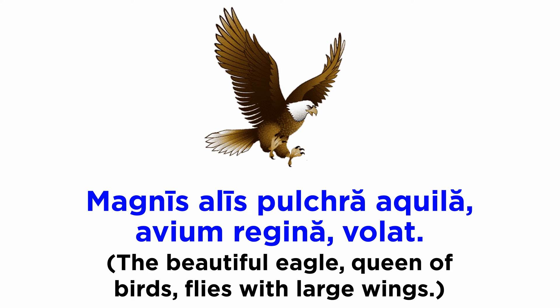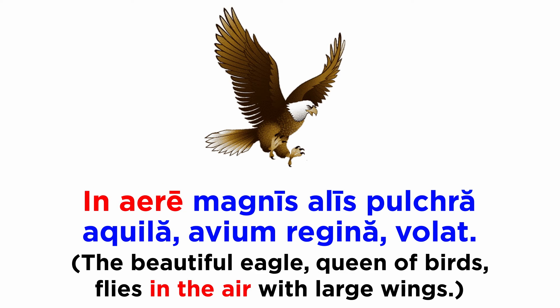We can add an ablative of means: 'Magnis alis pulchra aquila avium regina volat' — 'The beautiful eagle, queen of birds, flies with large wings.' Then we can use an ablative of place: 'In aere, magnis alis pulchra aquila avium regina volat' — 'The beautiful eagle, queen of birds, flies in the air with large wings.'